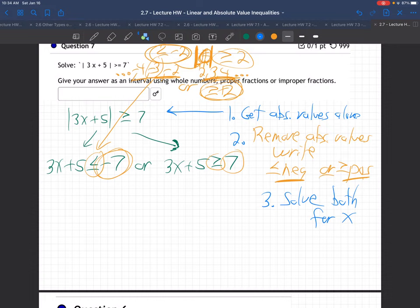Let's subtract 5 from both sides, and we get 3x less than or equal to minus 12. Divide by 3. So we get x less than or equal to negative 4.